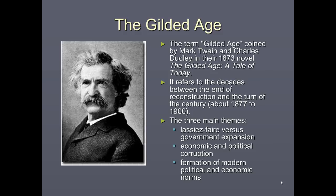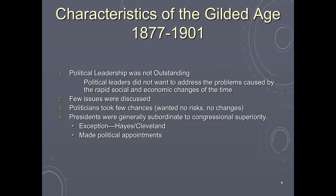Three things to think about when considering the Gilded Age: laissez-faire versus government expansion, economic and political corruption, and the formation of modern political and economic norms. Characteristics to consider: political leadership was not outstanding. Since the death of Lincoln, there wasn't really a president who grabbed hold of the nation's character until Theodore Roosevelt. The presidents during the Gilded Age had weak leadership and didn't want to address national problems caused by rapid social and economic changes.